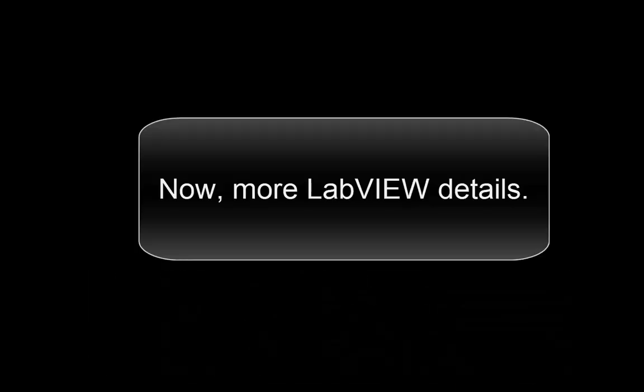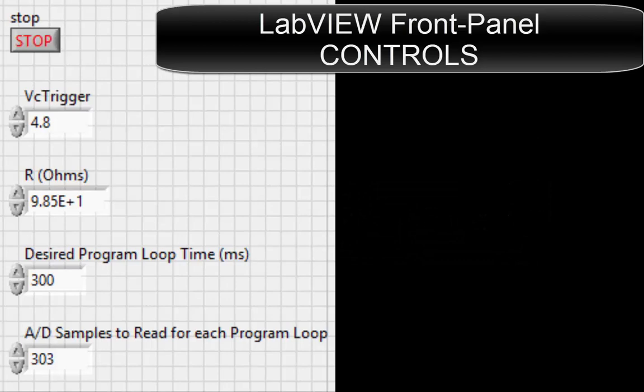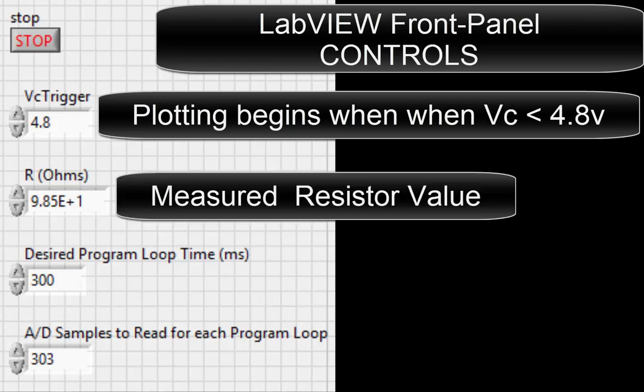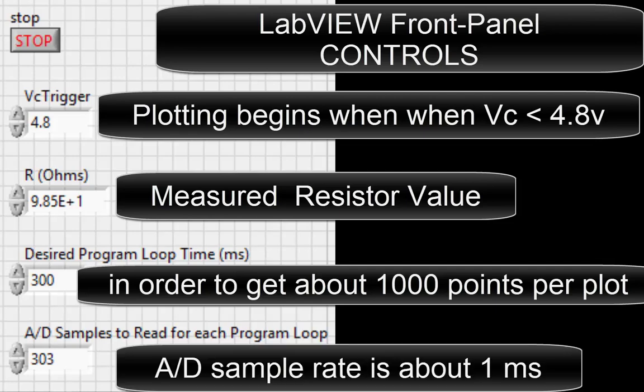Now more LabVIEW details. Here is the LabVIEW front panel controls. Plotting begins when VC is less than 4.8 volts. The resistor is measured at 98.5 ohms. Desired program loop time in milliseconds in order to get about 1,000 points per plot is 300 milliseconds. A to D sample rate is about 1 millisecond.